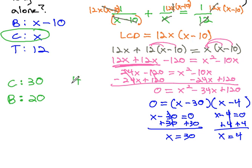Okay, what about when Cosmo is 4? If Cosmo does the job in 4 hours and Brittany does the job in 10 hours less, 4 minus 10 would be negative 6. Well, that doesn't work. The job can't be done in negative 6 hours.